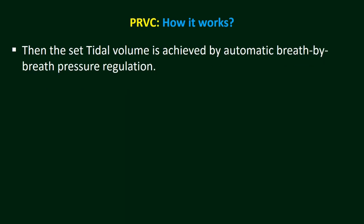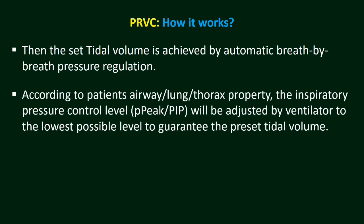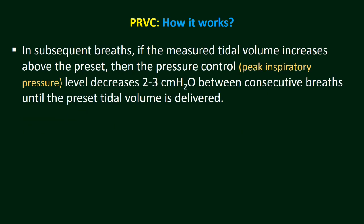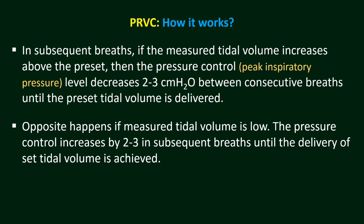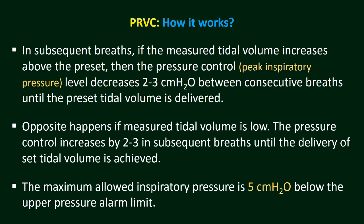The measured pressure is used for the next breath. Then the set volume is achieved by automatic breath-by-breath pressure regulation according to the patient's airway, lung, or thoracic properties. The inspiratory pressure control will be adjusted by the ventilator to the lowest possible level to guarantee the preset tidal volume. In subsequent breaths, if the measured tidal volume increases above the preset, peak inspiratory pressure decreases by 2 to 3 cmH₂O between consecutive breaths. If the measured tidal volume is low, pressure control increases by 2 to 3 cmH₂O until the set tidal volume is achieved.